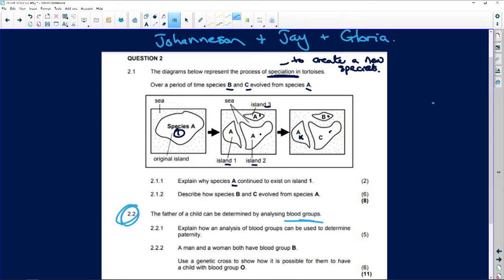Explain why species A continued to exist on island one: because the conditions were favorable, and there was no environmental pressure to change. Everything was the same, so they just carried on as normal and they passed their genes on to the next generation, and everybody lived happily ever after.